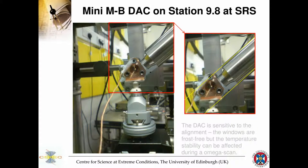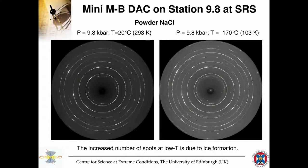Results showed that when the cell sits for a couple of hours at minus 170°C (100 K), more ice starts appearing in the diffraction pattern. So the design needed to be improved to keep the entire cell within the gas stream.